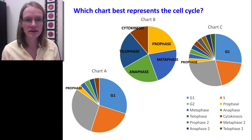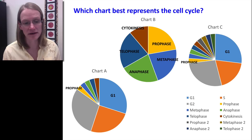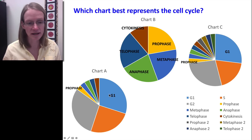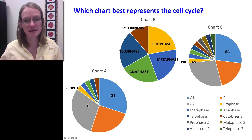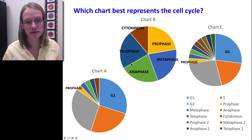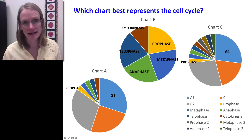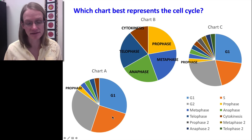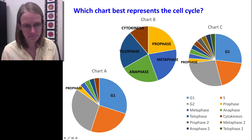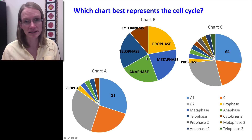I have three charts here with the question of which one best represents the cell cycle. They're all color coded — G1 is labeled in light blue on two of them, and G2 is labeled in gray on charts C and A. We know the cell cycle has to have those two gap phases, so that automatically excludes chart B, because chart B has no gap phase and no interphase.